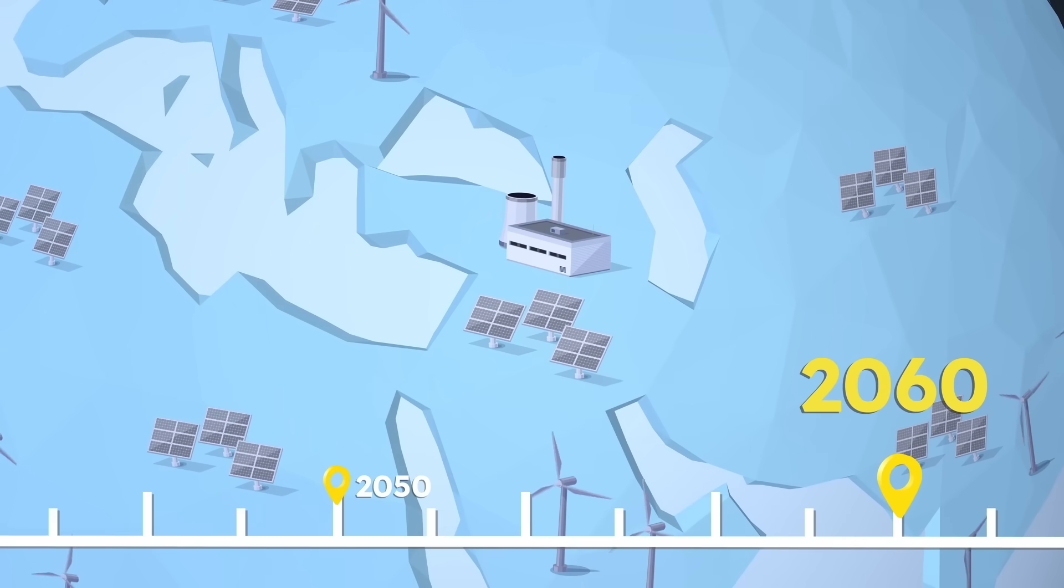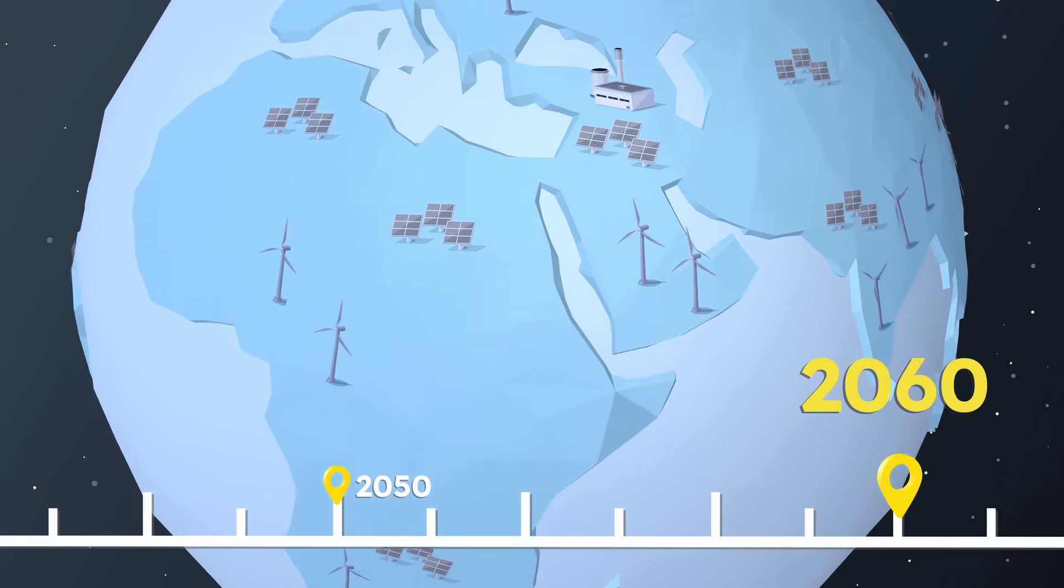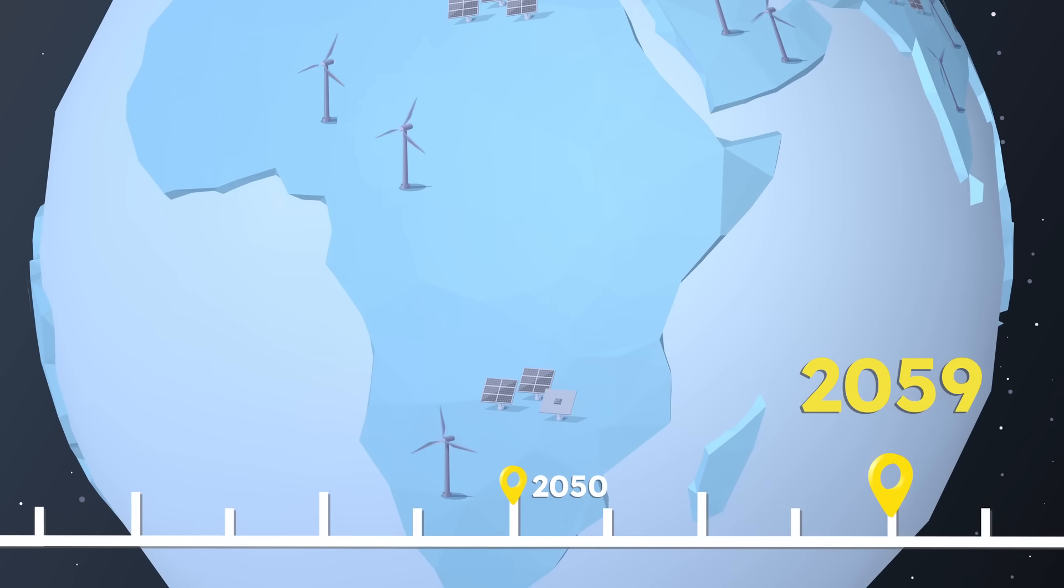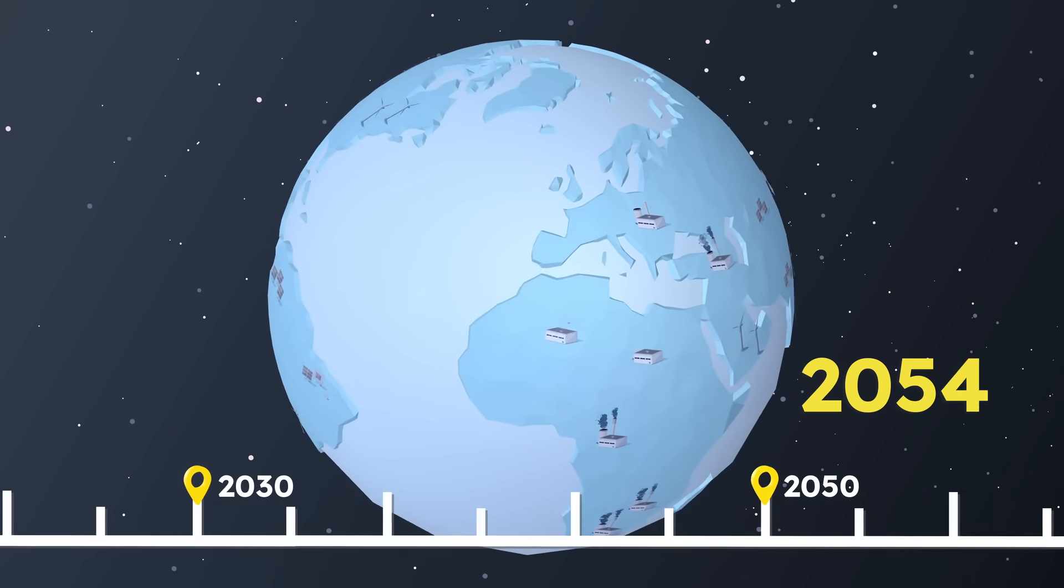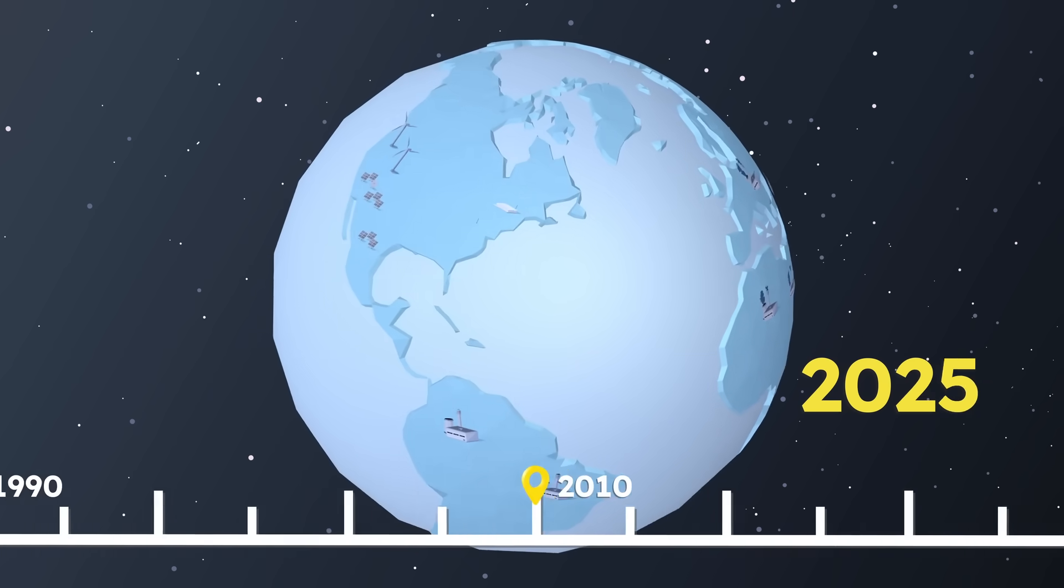How did we get here? Let's rewind. To close the last fossil fuel plant, we have to build renewable energy near it. To close the one before that, we had to build renewable energy near that one. To close fossil fuel plants, we had to build clean energy where the pollution was.